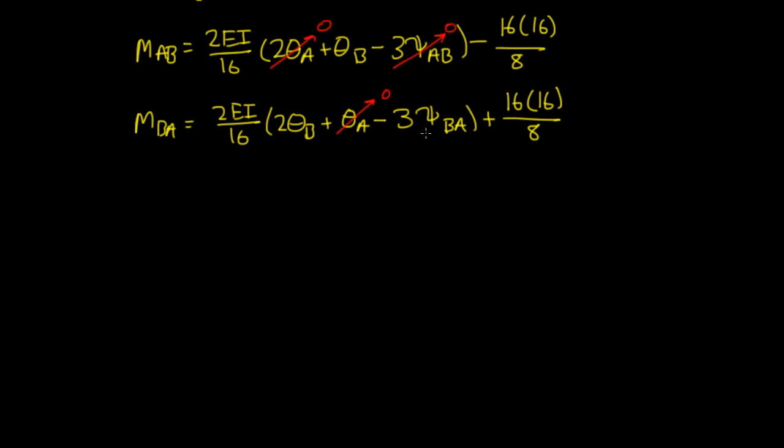If I simplify these equations down, M_AB equals 2EI over 16 times θ_B minus 16 times 16 over 8, that's 32. And member M_BA is 2EI over 16 times 2θ_B plus 16 times 16 over 8, which is 32.